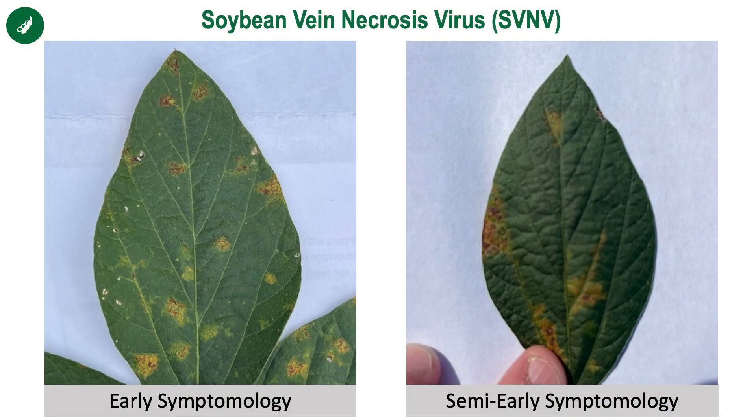However, just like the year that's been filled full of abnormalities and uncommon weather patterns and cycles, we're also seeing some less common soybean leaf diseases present within the fields as well. One of those diseases is what's called soybean vein necrosis.